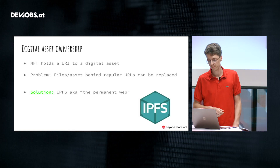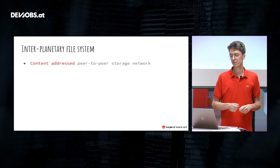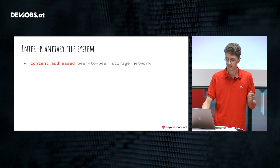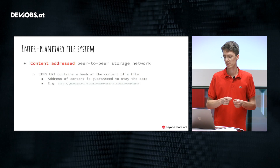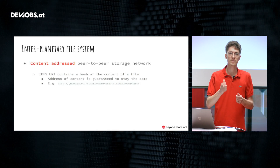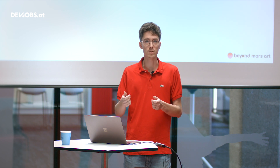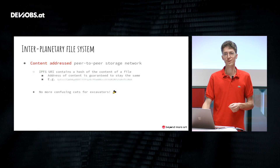There's a solution for that: it's called IPFS, the InterPlanetary File System — also known as the permanent web. IPFS is a content-addressed, peer-to-peer storage network. 'Content-addressed' means the IPFS URI contains a hash of the file's content. As you might know, a hash is always exactly the same for the same input, so you can't have a different URI for the same image, or the same URI for different files. This guarantees that the NFT always points to the exact same digital asset — no more confusing cats for excavators.